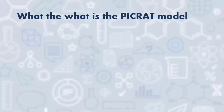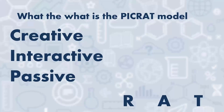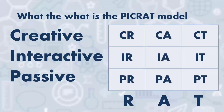That's the RAT model: replacing, amplifying, and transforming the classroom. Now, what is the PICRAT model? We introduce new elements to replace, amplify, and transform — those elements are passive, interactive, and creative. Passive learners are observers or bystanders in their learning, which isn't always bad. This webinar is an example of passive learning. The interactive approach means students engage actively with material. For creative, students create materials themselves, which is the apex of student engagement. Combining the RAT model with this PIC framework creates a matrix of different ways technology can influence teaching and learning.